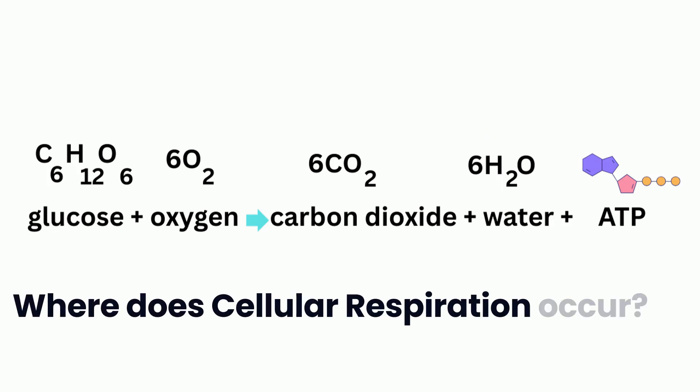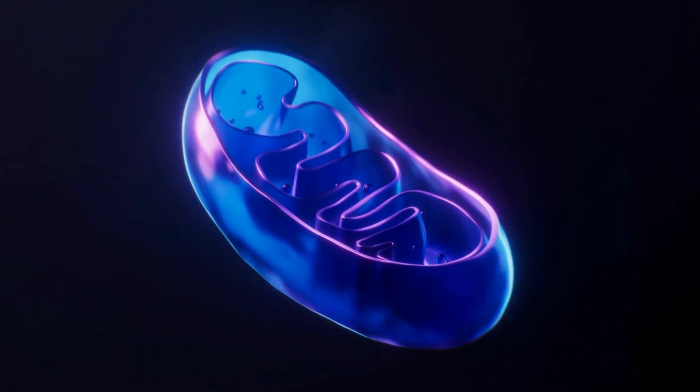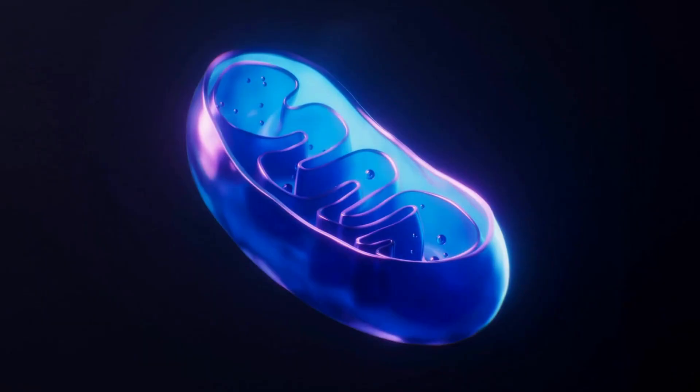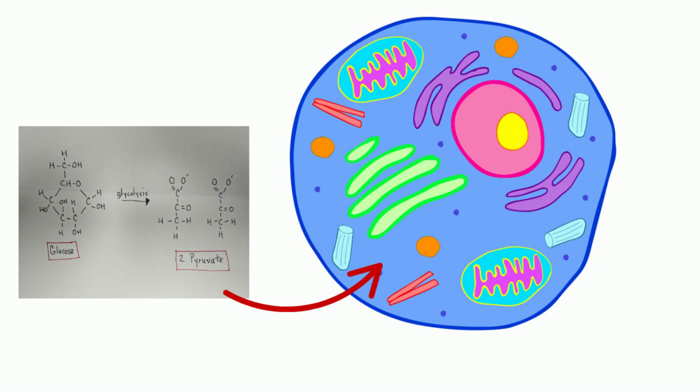Cellular respiration takes place mostly in a part of the cell called the mitochondria. Yes, the powerhouse of the cell. But in reality, it starts in the cytoplasm with a process called glycolysis.